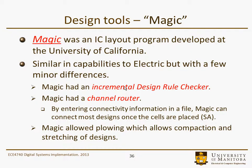In the States, a tool called Magic was used, developed as a university tool to allow people to build integrated circuits from a cell library. It had an incremental design rule checker — not quite as sophisticated as Electric's — and a channel router. Within Electric you had to route everything by hand; in Magic you just entered connectivity information in a file and Magic would connect up the design once cells were placed, using a variation of simulated annealing.